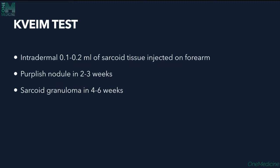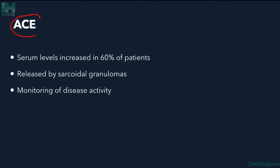The Kveim test is an intradermal test: 0.1 to 0.2 ml of sarcoidal tissue is injected intradermally into the forearm. In 2 to 3 weeks, purplish nodules appear; in 4 to 6 weeks, sarcoidal granulomas can be seen. Test positivity confirms sarcoidosis, though it loses importance as the disease becomes chronic. Angiotensin converting enzyme levels are increased in 60% of patients and help in monitoring disease activity.